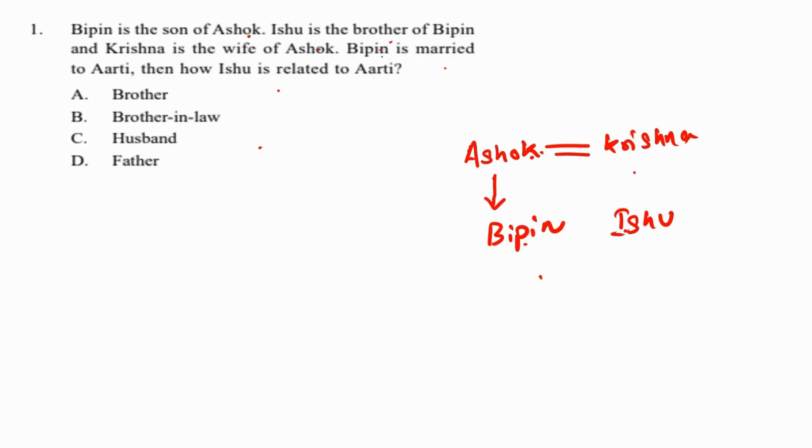Moving on, Bippin is married to Aarti. So how is Ishu related to Aarti? Aarti is no other than brother's wife, so Ishu is brother-in-law to Aarti. Hence option B is our answer.